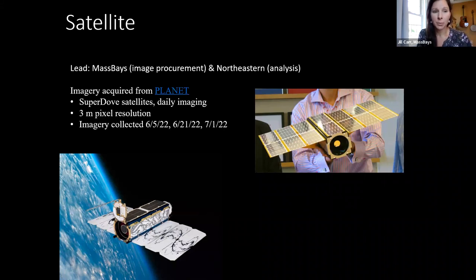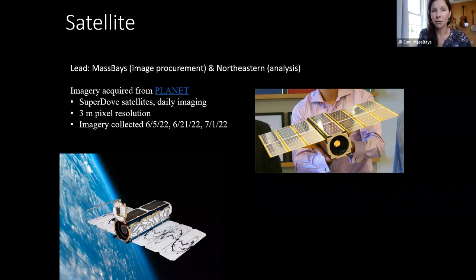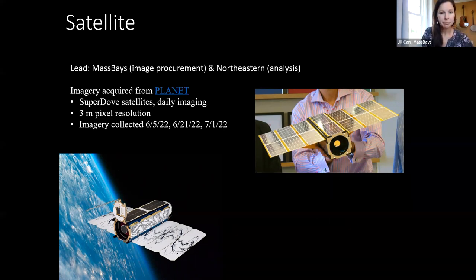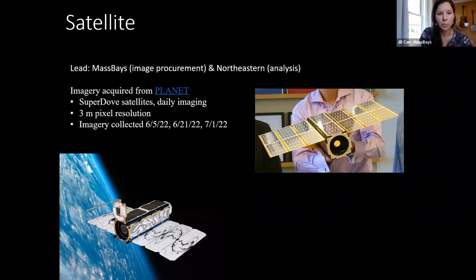The pixel resolution is three meters, which is pretty good. Other free datasets like Landsat are 15 or 30 meters — great for tracking global changes but not suitable for eelgrass mapping. I was able to get imagery for all five of our sites from three dates shown there. Northeastern — Randall and her team — are going to be interpreting those images.